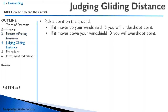Conversely, a tailwind allows you to glide farther than with no wind. Judging gliding distance will come up often in your training — you'll need to figure out whether you'll touch down where you intend, or before or past that point. The first time you experience this is on approach for landing. Pick a point on the ground where you intend to touch down. If that point moves up your windshield, you will undershoot it; if it moves down, you will overshoot it.